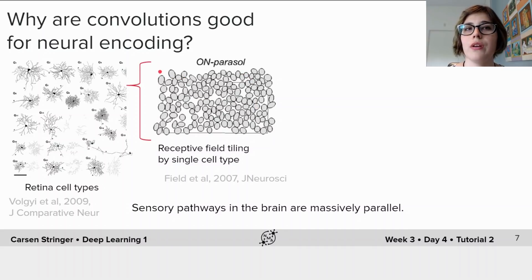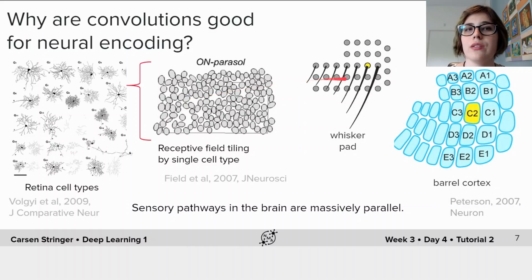This picture here shows the part of visual space in which each one of these cells responds to. In barrel cortex we have a similar situation where each of the whiskers activations like this one here corresponds to a single cortical column of activity and the functions computed in each of these columns is similar.